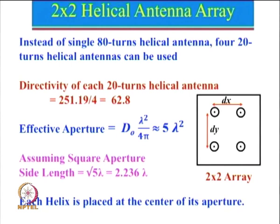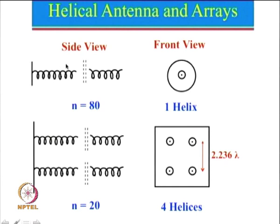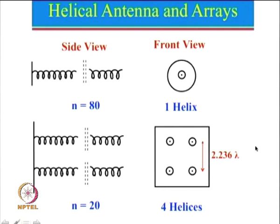Let us look at this in a little more detail. This is the helical antenna side view—for n equal to 80 turns, it will be a very long helical antenna. The front view shows the helix with the ground plane. For the 2 by 2 array, the side view will show only 2 of the 4 elements since the other two are behind. The front view shows all 4 helices, with spacing of 2.236 lambda between them. This concept has been extended further.